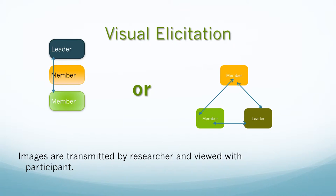Let's look at a few examples. For visual elicitation, I've created two very simple diagrams that would allow the participant to respond by describing which was most closely aligned to the ways that their leaders and team members relate. Using shared whiteboard tools, they could also add to these diagrams and perhaps put in other members, other leaders, other relationships, etc.